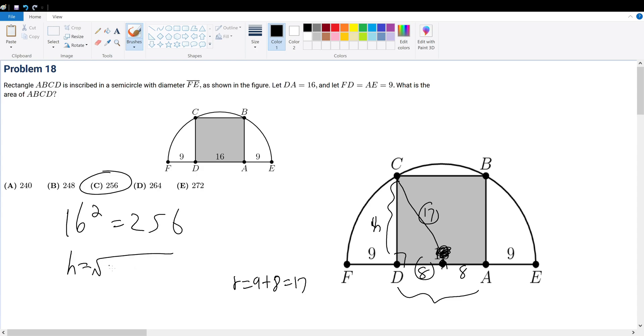H would equal the square root of 17 squared minus 8 squared. That's the square root of 289 minus 64, which is 225, which is 15. So this height is 15.